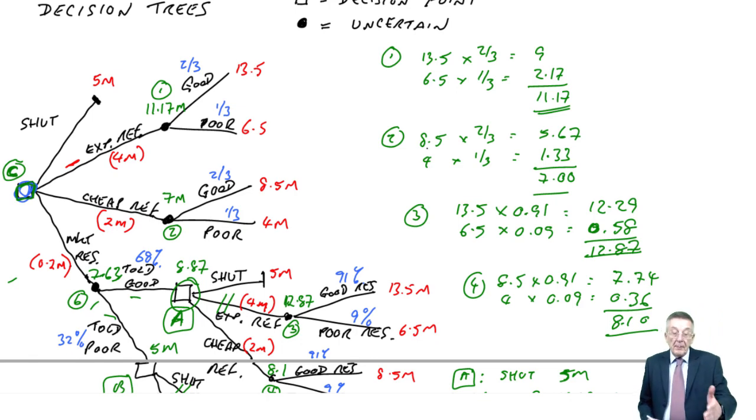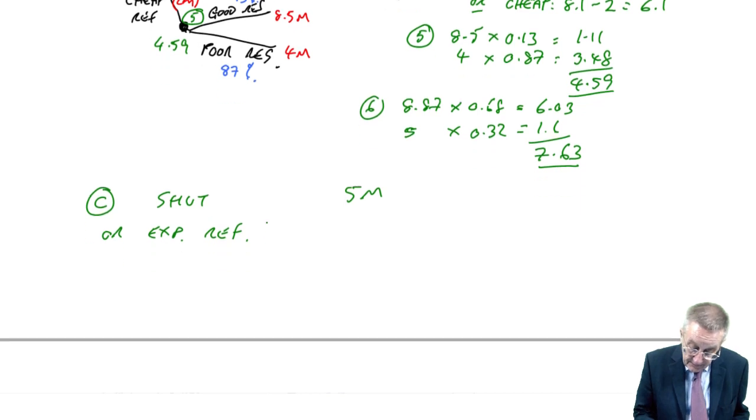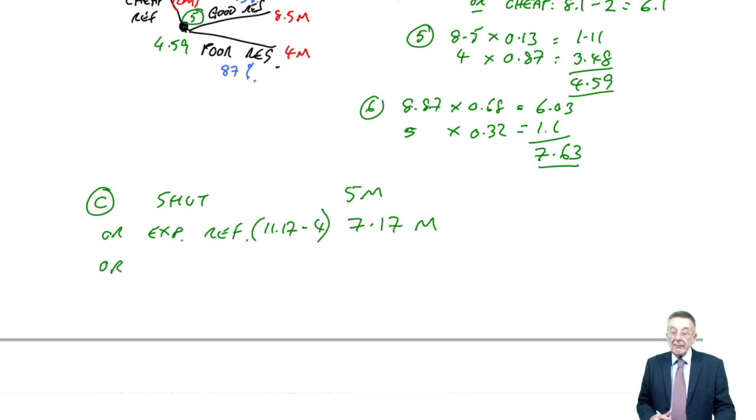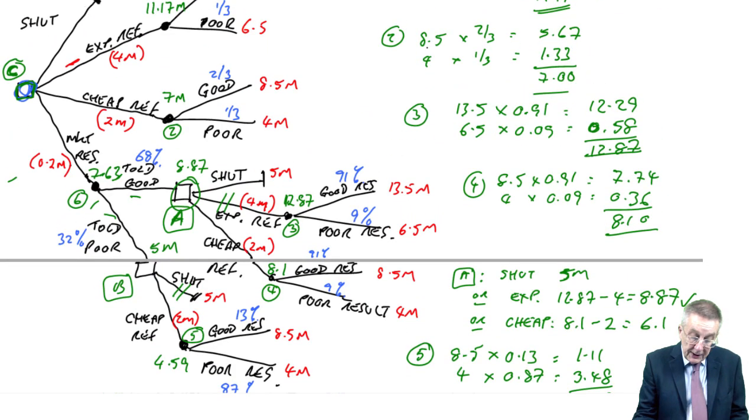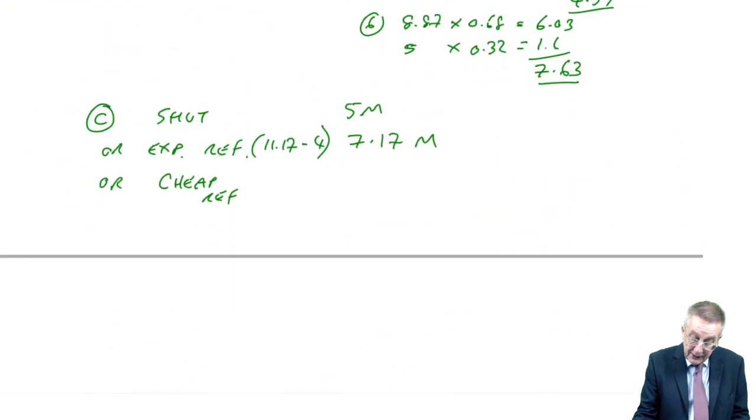Or the second option was to do the expensive refurbishment. Expensive refurbishment, we pay out 4 and get back an expected 11.17. And so a net 7.17. Or we do the cheap refurbishment. The cheap refurbishment, we pay out 2 and get back 7 and net 5 million.